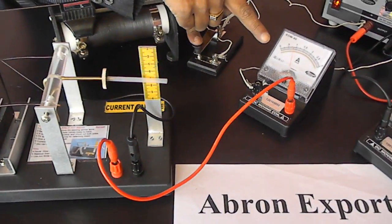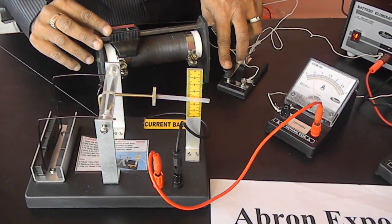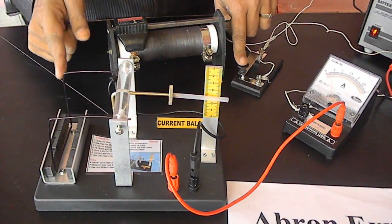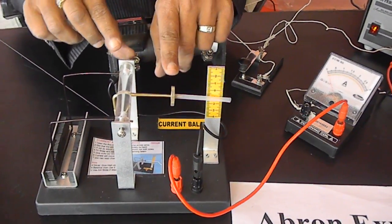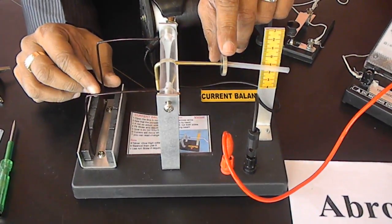You can regulate the current by moving the rheostat and see the changes. The adjustment can be made so that you can adjust the angle of this wire.